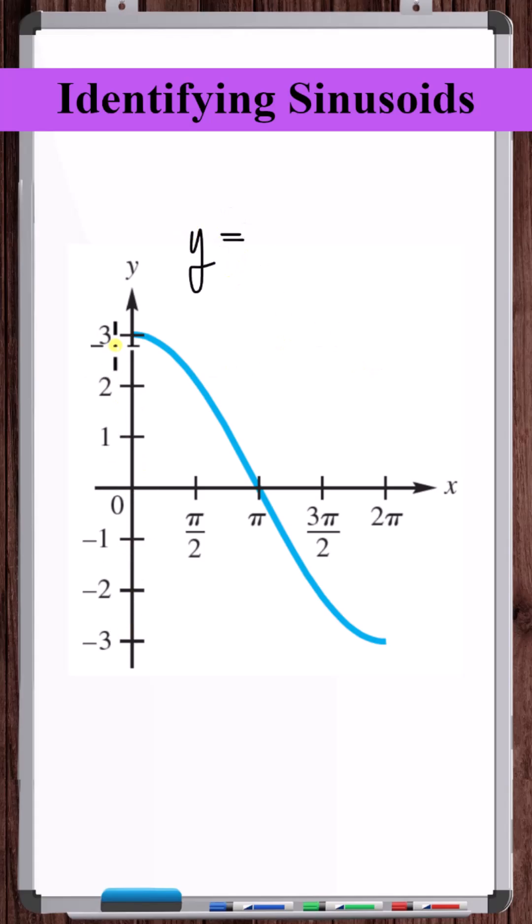We can also see that the amplitude is 3, not 1. This function has been scaled up by a factor of 3, so we'll put a 3 out front of the cosine.